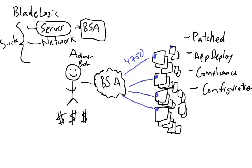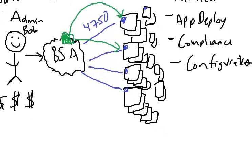Now Bob has a centralized interface — one place where he can see and manage all of these servers. No more logging on to individual boxes, which is very time-consuming. No more individual patching, no more doing individual compliance and configuration. In BSA, if you want to deploy patches or just do an analysis, you create a job, define it, and run it against any number of servers — all servers, groups of servers, whatever you want. The same concept applies for deployment. This basically turns Bob into a super user, going from managing 50 servers to managing 500 servers — however many Bob can reasonably automate and manage.